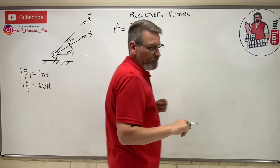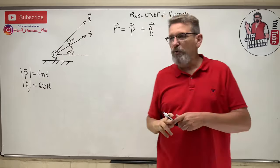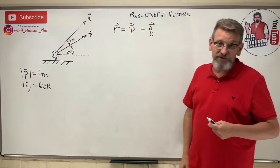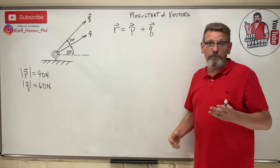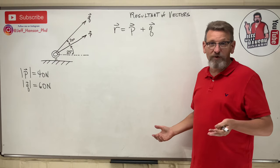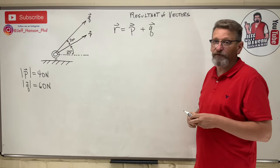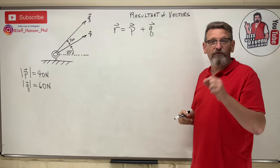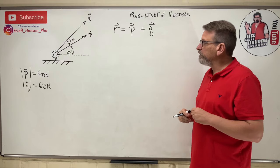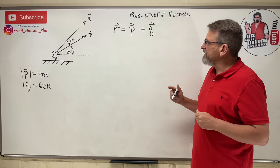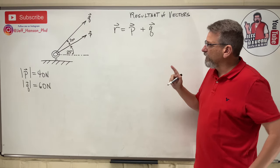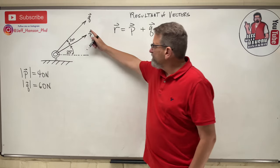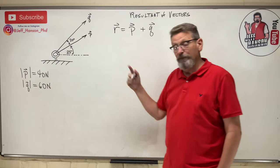In our course, this is the first time we've seen Newtons, which is just the metric equivalent of force. A Newton is a kilogram meter per second squared. Now let's see what we can do — we know the magnitude of these two vectors.